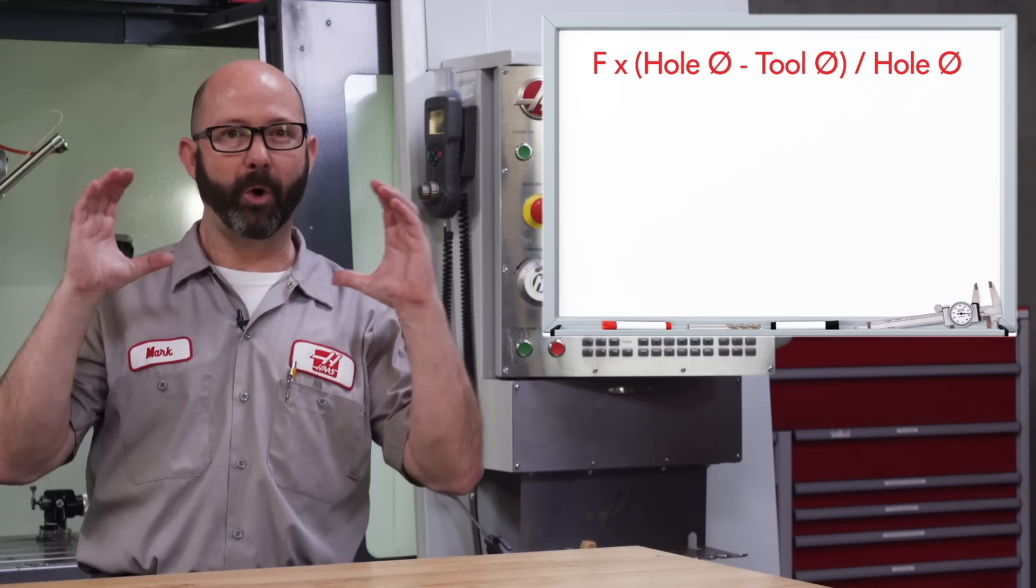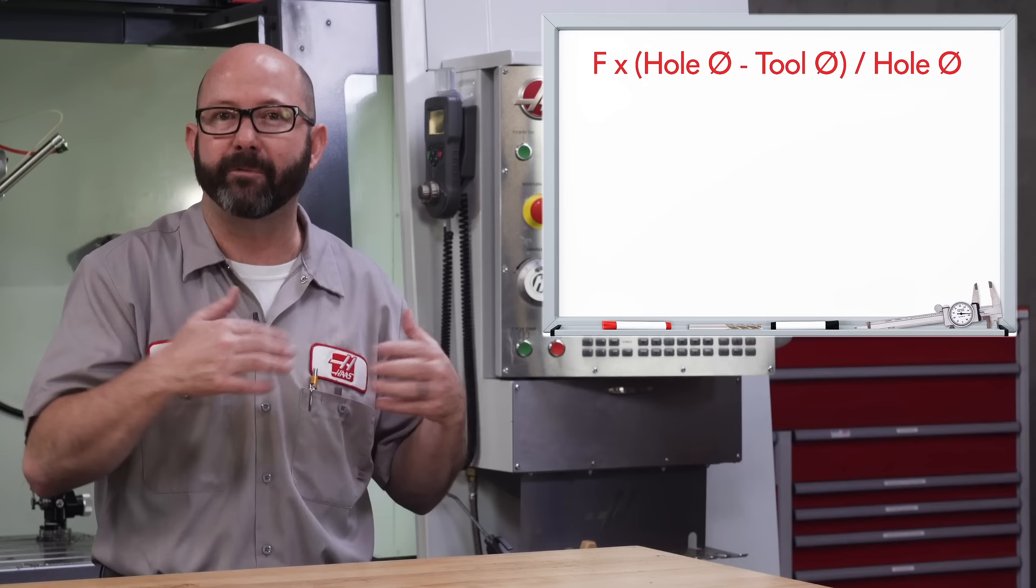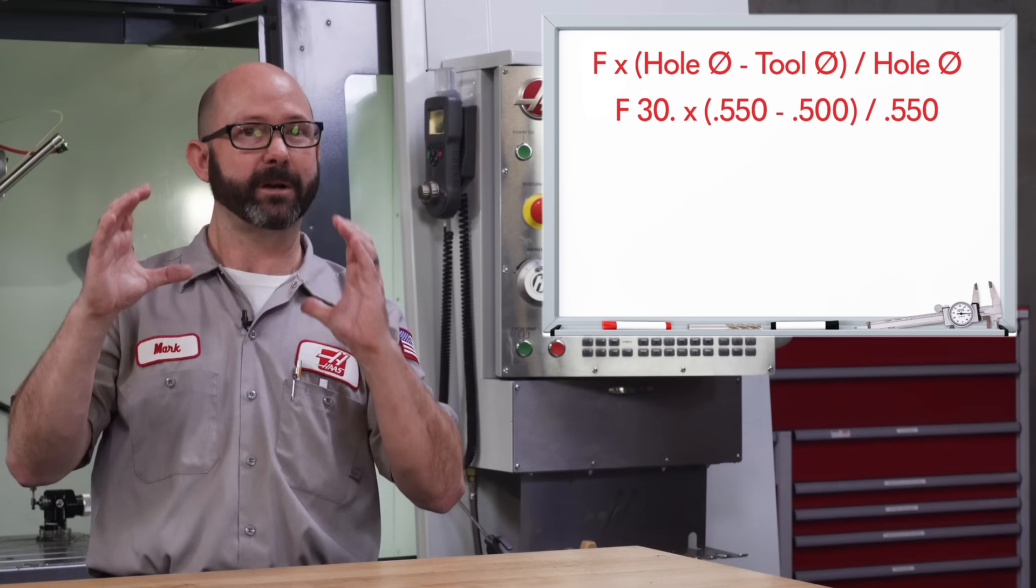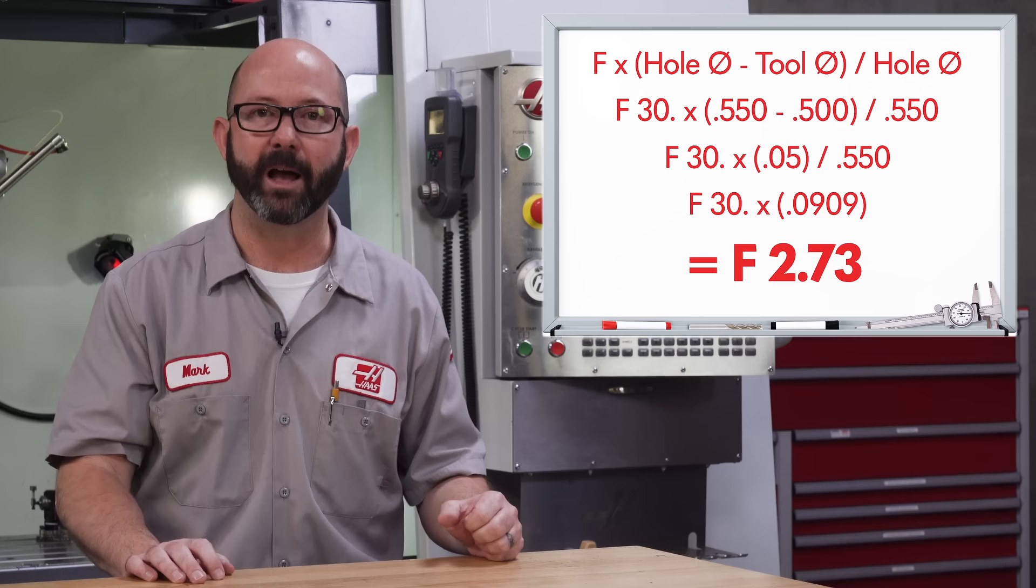Ready for the formula? Machinists love formulas, so here we go. Feed rate times whole diameter minus our tool diameter, all divided by our whole diameter. And we know from our example earlier that we want our feed rate, our effective feed rate, to be 30 inches a minute. So F30 times our whole diameter, 550, minus our tool diameter, 500, all divided by our whole diameter again, 550. If we do the maths and we fill in all the blanks, we're going to end up with a feed rate to be used in our program of F2.73 inches.